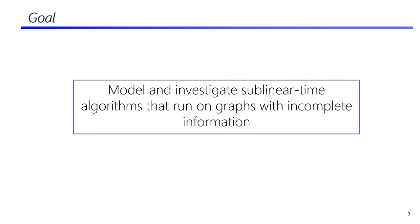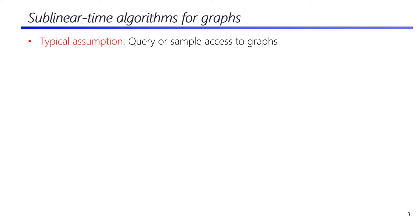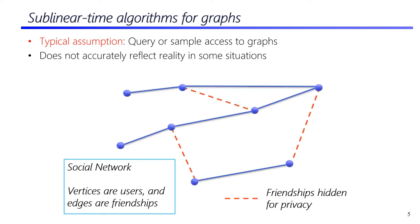The main goal of our work is to model and study sublinear time algorithms for graphs that are incomplete. In the setting of sublinear time graph algorithms, the standard assumption is that an algorithm has query or sample access to input graphs. However, this assumption does not accurately reflect reality in some situations. For example, consider a social network represented as a graph where vertices are users and edges denote friendships. Some users might decide to hide their friendship for privacy reasons, and an analyst accessing this graph will not see such edges. We call such edges as being erased from the graph.